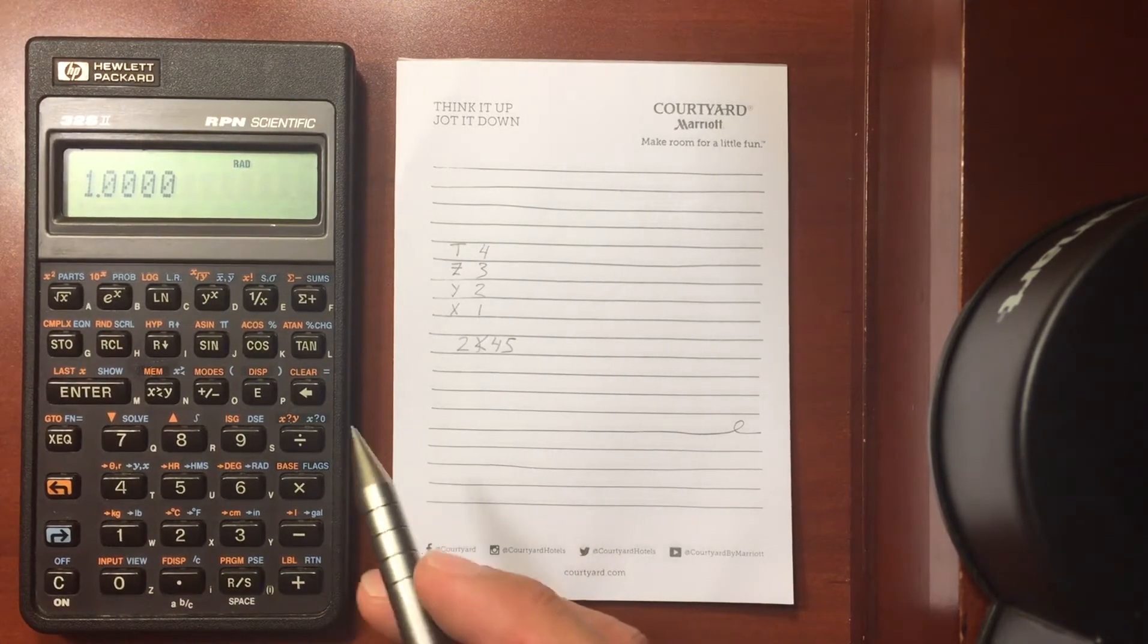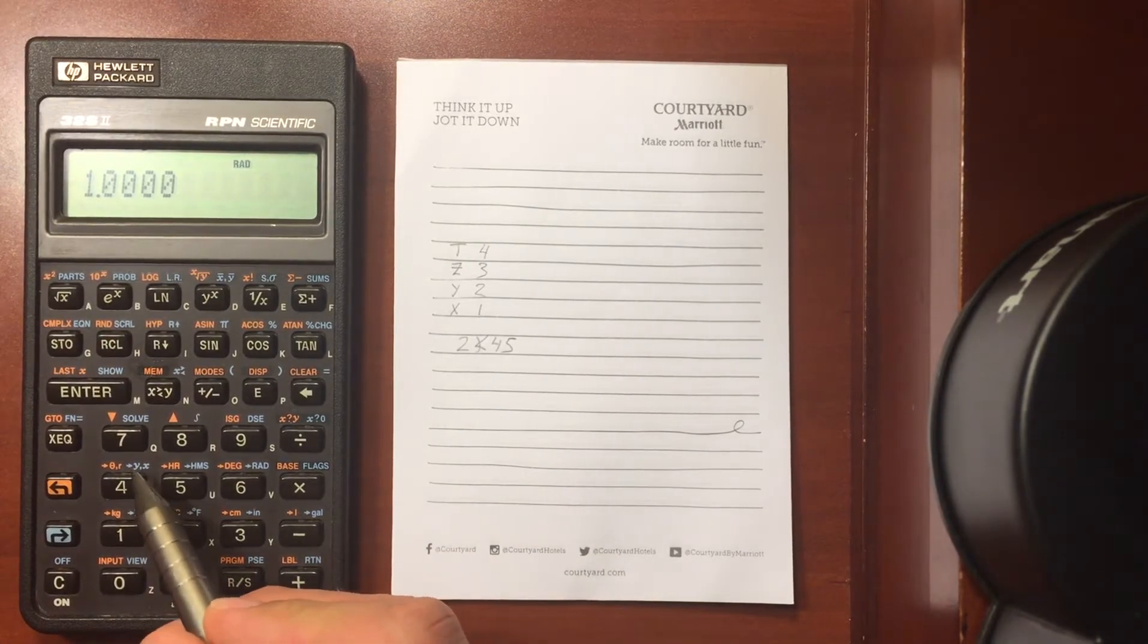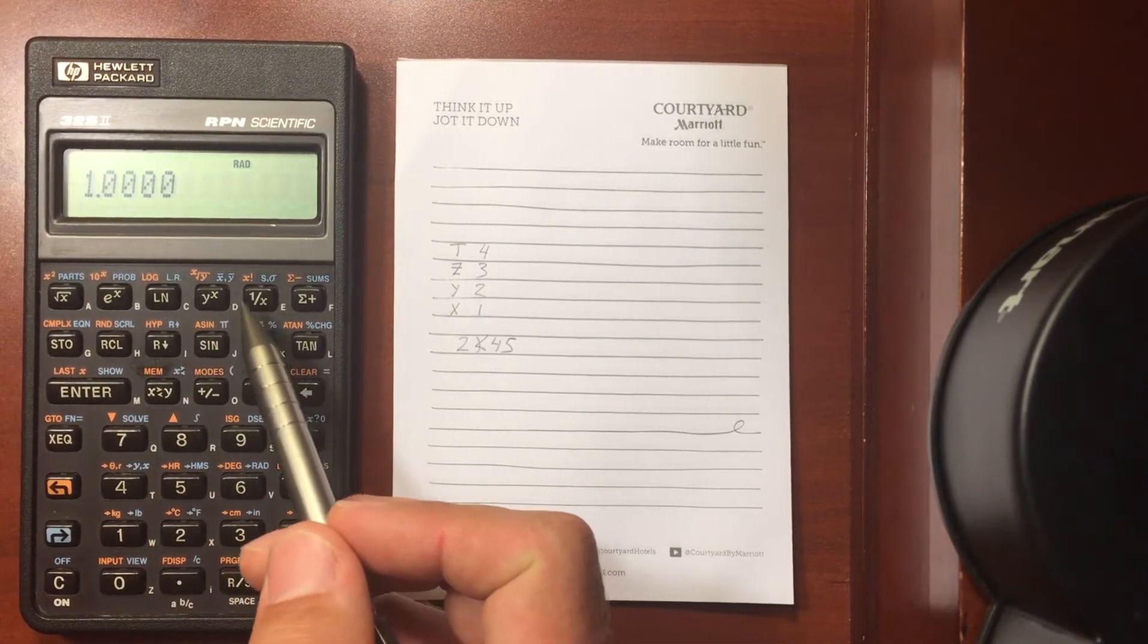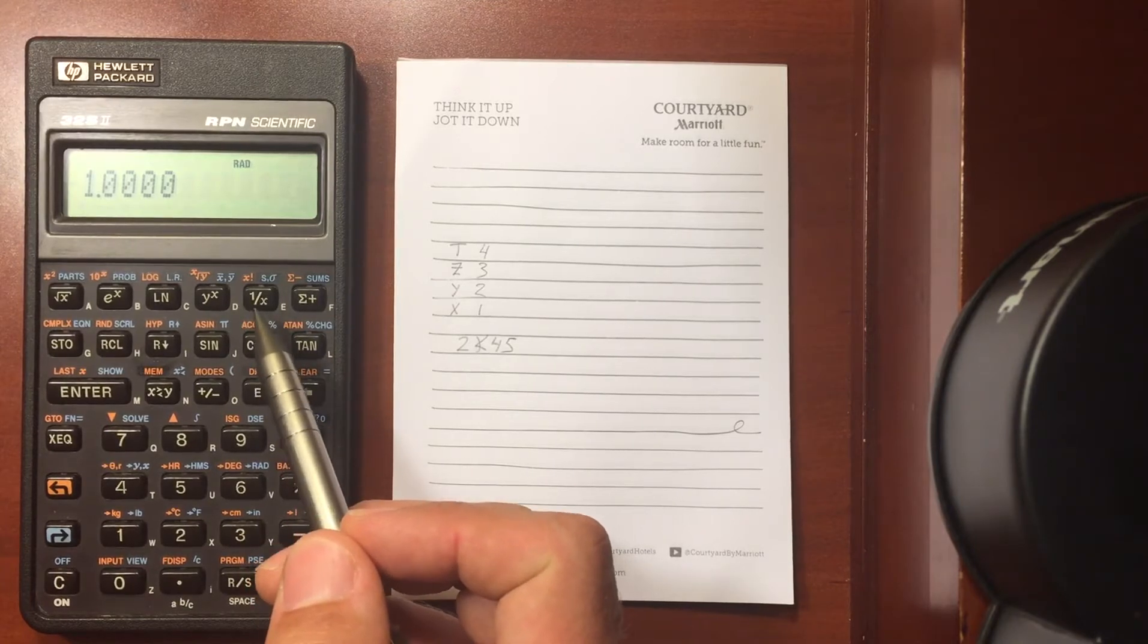Now all of these keys that you see here, this Y and X, this E to the X, this Y to the X, this 1 over X, those all refer to the register itself.